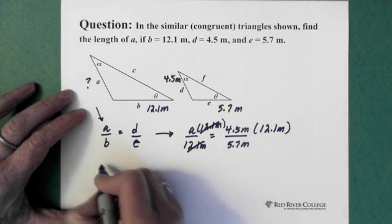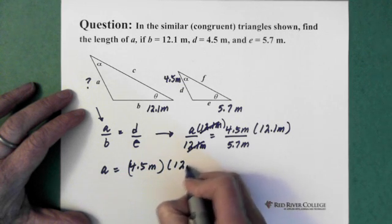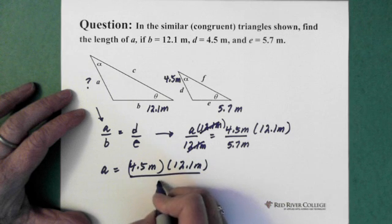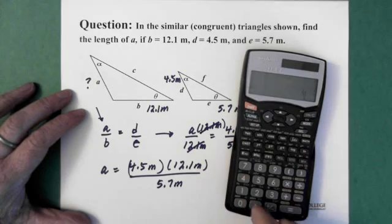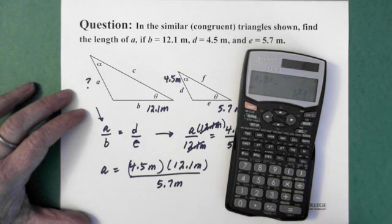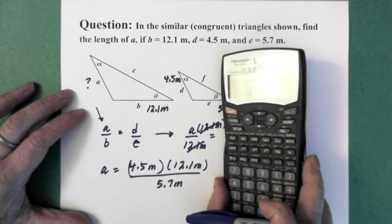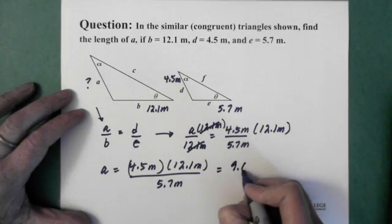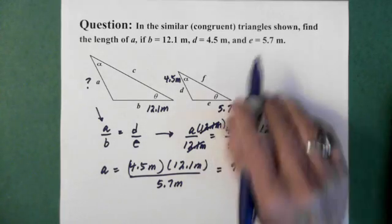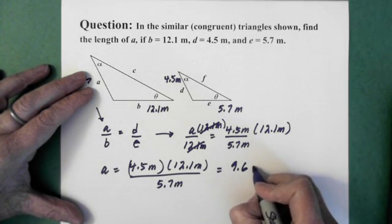So we're left with A equals 4.5 meters times 12.1 meters divided by 5.7. And we just go to the calculator. 4.5 times 12.1 divided by 5.7 equals 9.55 so 9.6. So A equals 9.6. We have two sig figs, three here so we're going to go with two sig figs. And that would be our distance and it would be 9.6 meters.